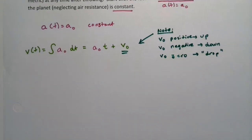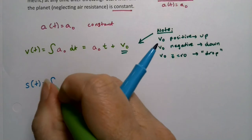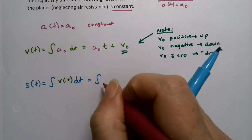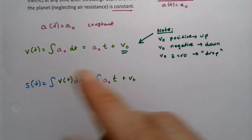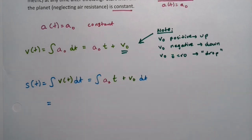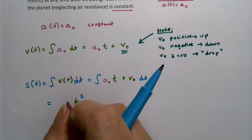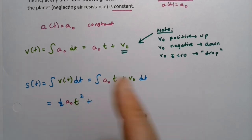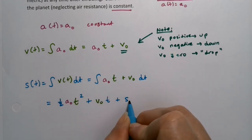To find position, we take the integral of velocity. So position is the integral of a₀t plus v₀ with respect to time. That gives us (a₀/2)t² — because we add 1 to the power of t and multiply by one-half — plus v₀t, plus the initial position s₀.